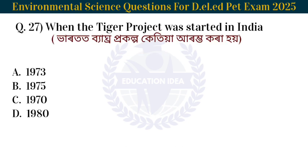Next question: When was Project Tiger started in India? Varton bryaggha pokalpo kiti arombo kora hissil. The answer is 1973. Project Tiger was started in India in 1973.